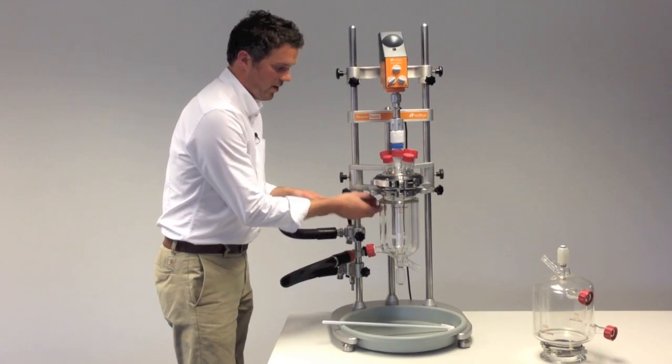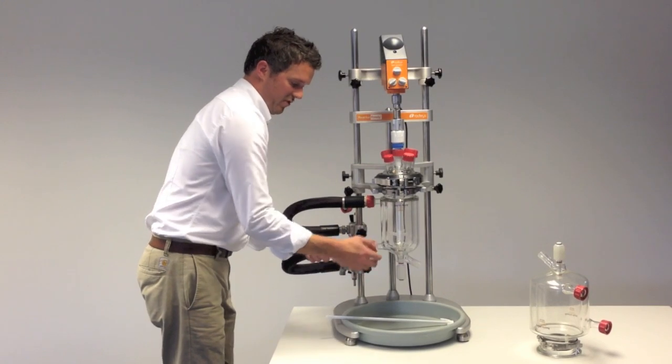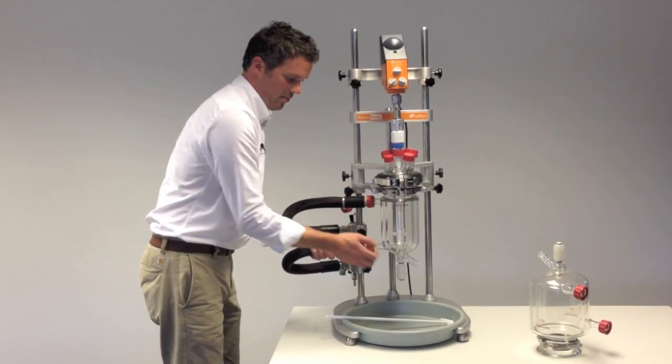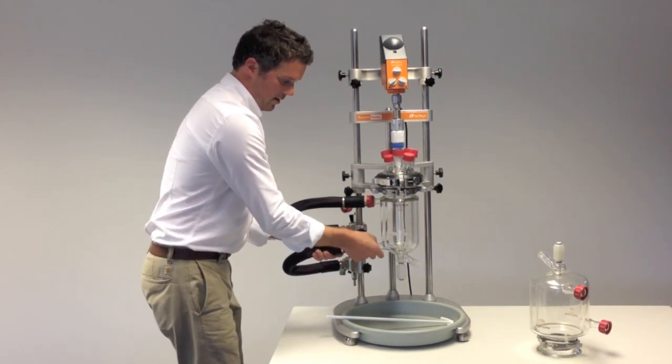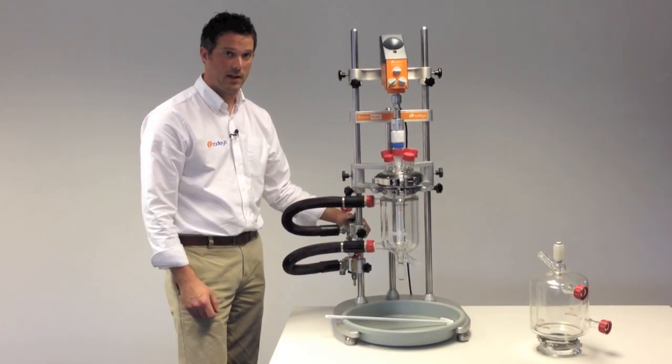And then reattach the hoses. Just push a bit and the red collars tighten them onto the sidearms. Then once you close the vent valve at the top you're ready to fill up from your recirculator again.